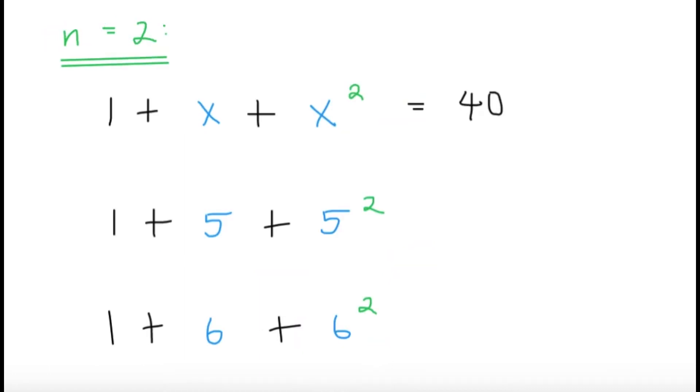Let's go to the next value of n. If n equals 2, we can use the same concept again, similar to the n equals 4 case. Well, 1 plus 5 plus 5 squared, that's less than 40. In fact, this part is equal to 31. And then 1 plus 6 plus 6 squared, that's greater than 40. Because the left side here is 43. So again, the solution must be some value of x between 5 and 6, but that's not going to be an integer. So for n equals 2, there will be no solution.